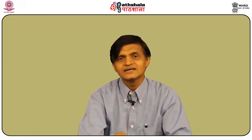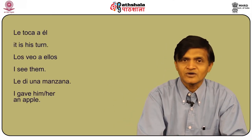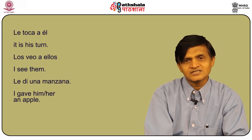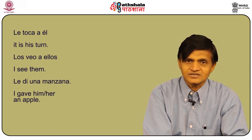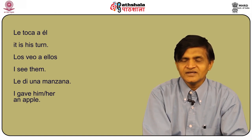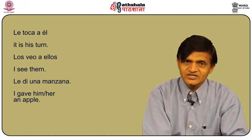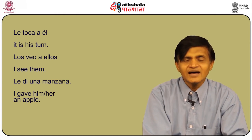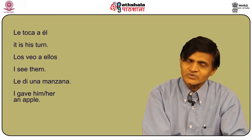Where are the indirect object pronouns placed? Just like the direct object pronouns, indirect object pronouns are also placed before both simple and compound forms of the conjugated verb. In English it is the opposite — the pronouns follow the verb. For example: Rubina gave me the suitcase — Rubina me dio la maleta. I have given him my notebook — Le he dado mi cuaderno.